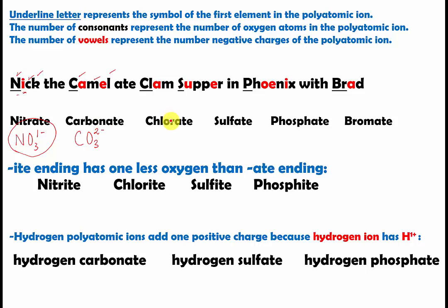Then we have chlorate, which is referred to by 'clam.' Cl is underlined for chlorine. There are three consonants, giving three oxygen atoms, and one vowel, so it's one minus. You may have noticed that all of these polyatomic ions have an '-ate' ending, because of the word 'ate' in the sentence — '-ate' for the -ate polyatomic ions.